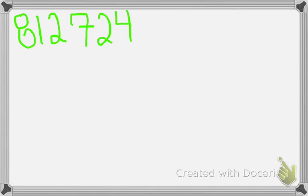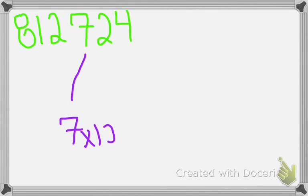So now we take our fourth number, which is 7, and multiply it by 10 to the power of 2, because there are 2 numbers after 7 in our original number.